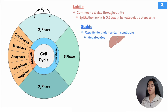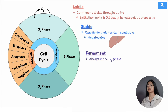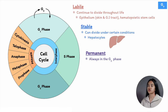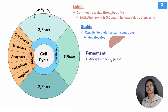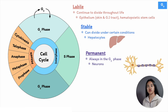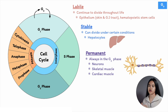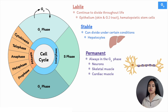Then there are permanent cells that don't divide — they're always in the G0 or resting phase. They cannot reproduce themselves, even after an injury. Examples include nerve cells, skeletal muscle cells, and cardiac muscle. That's why brain damage can be permanent. So those are the three types of cells.